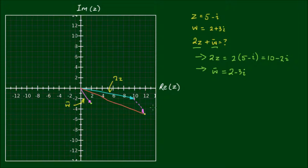And to complete the picture I can draw the resultant vector from the origin to the new coordinate of 12, negative 5. So this is the resultant vector 2z plus w bar, 12 minus 5i.